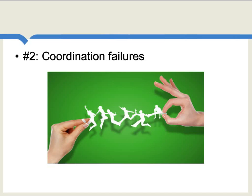A second argument for industrial policy has to do with what are sometimes called coordination failures. To have a successful automobile industry, your country also needs an auto parts industry and perhaps an extensive rail network to ship parts to automobile production plants. But no single private sector individual may move first and build his part of the network because he sees that the other individuals are not investing. In this argument, there's a potential role for the government to make a big push and get everyone on board, helping to overcome these coordination failures.